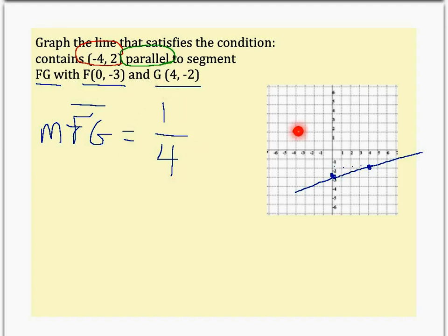so will the line here. So I'll start with my point, count up 1 and to the right 4, up 1, to the right 4 and so on. So my line is going to look something like this. Let's go ahead and graph it and make it for real.